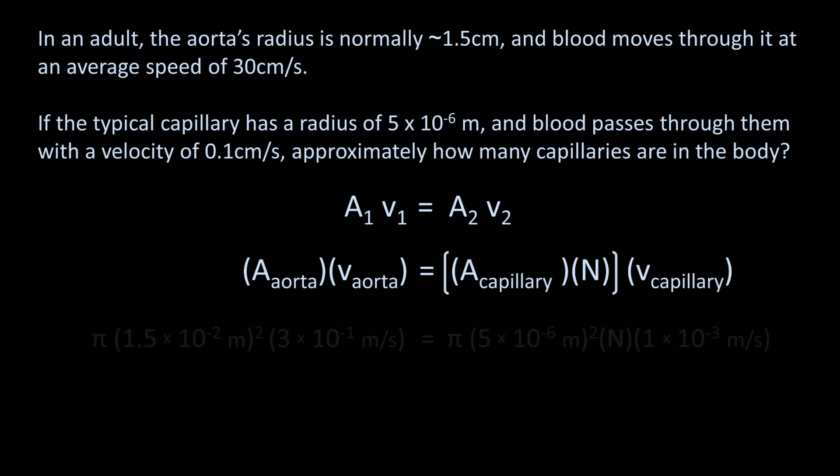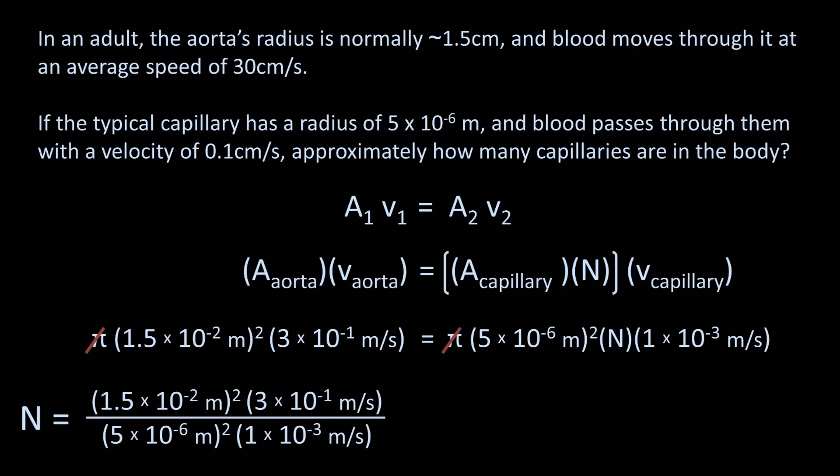Substitute in the known values. Pi cancels out. And solve for N. To make the arithmetic just a little more manageable, we can distribute the second power and rearrange terms. And with the help of a calculator, we determine that there are approximately 2.7 times 10 to the 9th capillaries in the body.